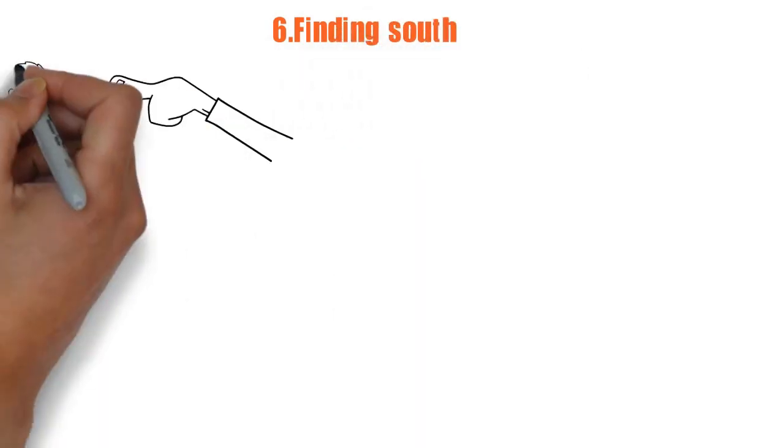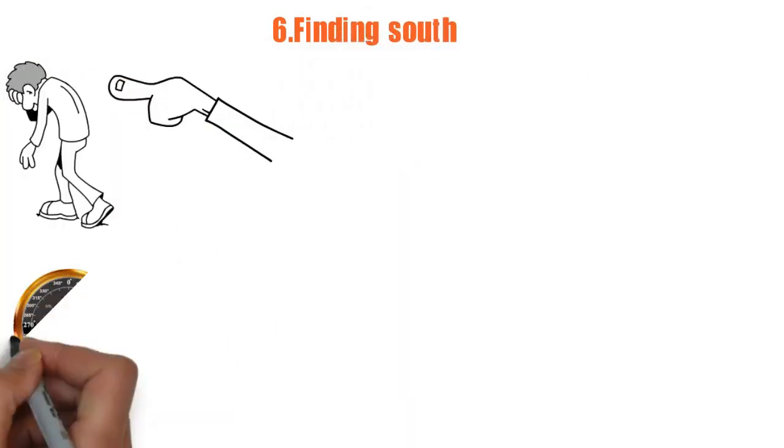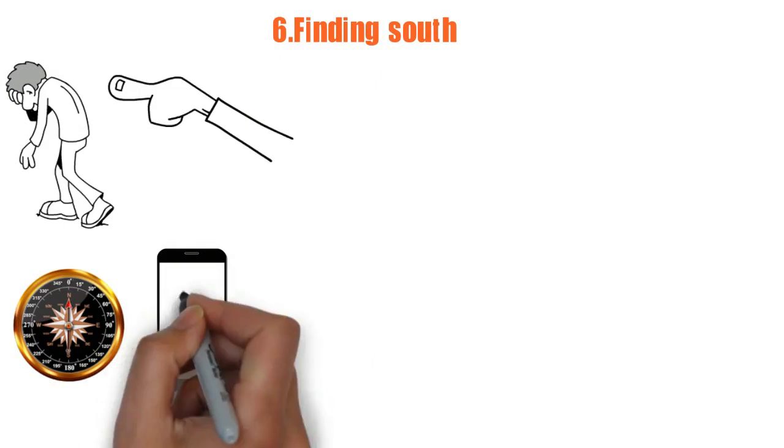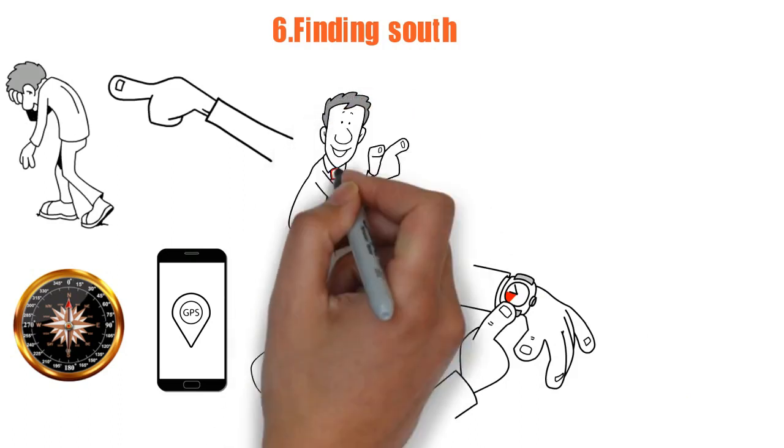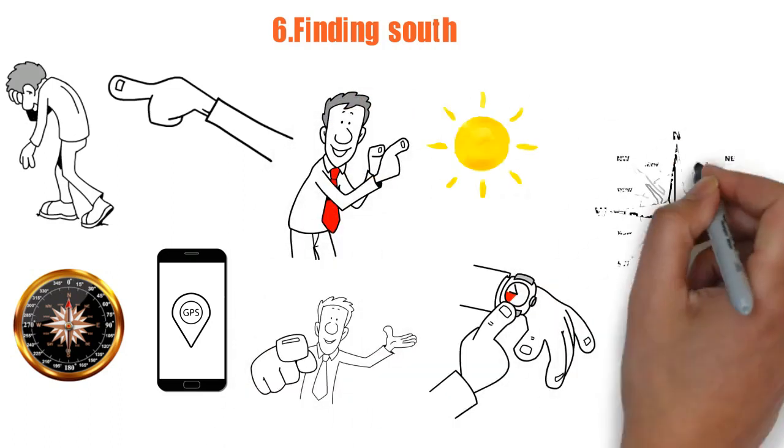6. Finding south. In case you ever get lost and don't have a compass or smartphone with GPS that works, don't despair. As long as you have an analog watch and can see the sun, you can figure out the directions.